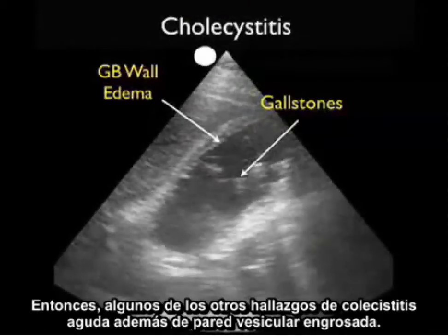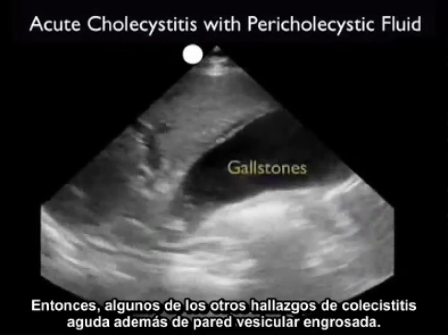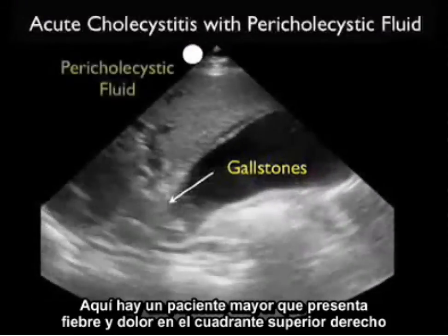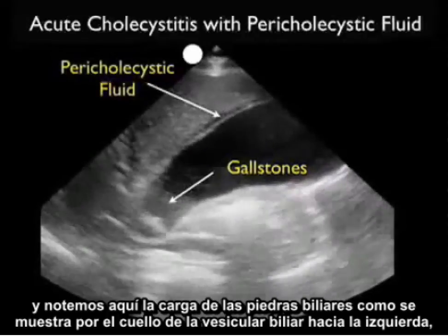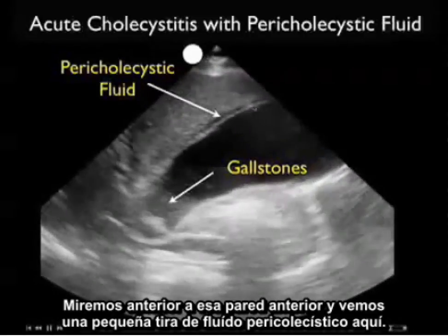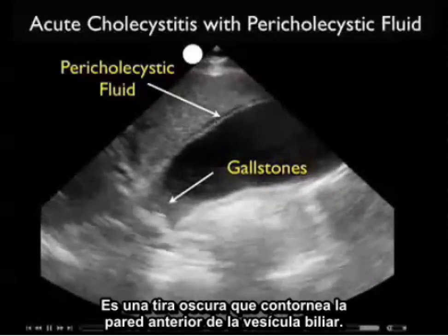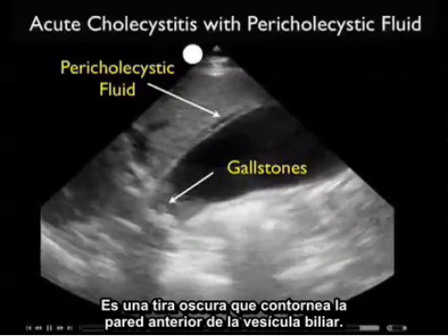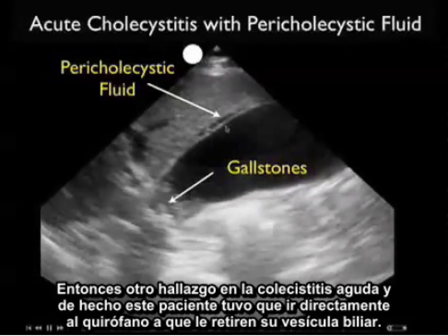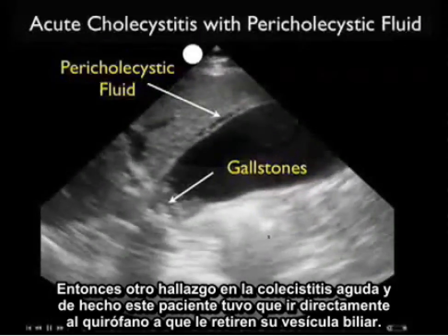So some of the other findings of acute cholecystitis in addition to a thickened gallbladder wall: here's an elderly patient presenting with fever and right upper quadrant pain. Notice here the significant burden of gallstones down by the neck of the gallbladder to the left. But let's look anterior to that anterior wall, and we see a small stripe of pericholecystic fluid — that dark stripe outlining the anterior wall of the gallbladder — another signature finding in acute cholecystitis. In fact, this patient had to go directly to the operating room for removal of the gallbladder.